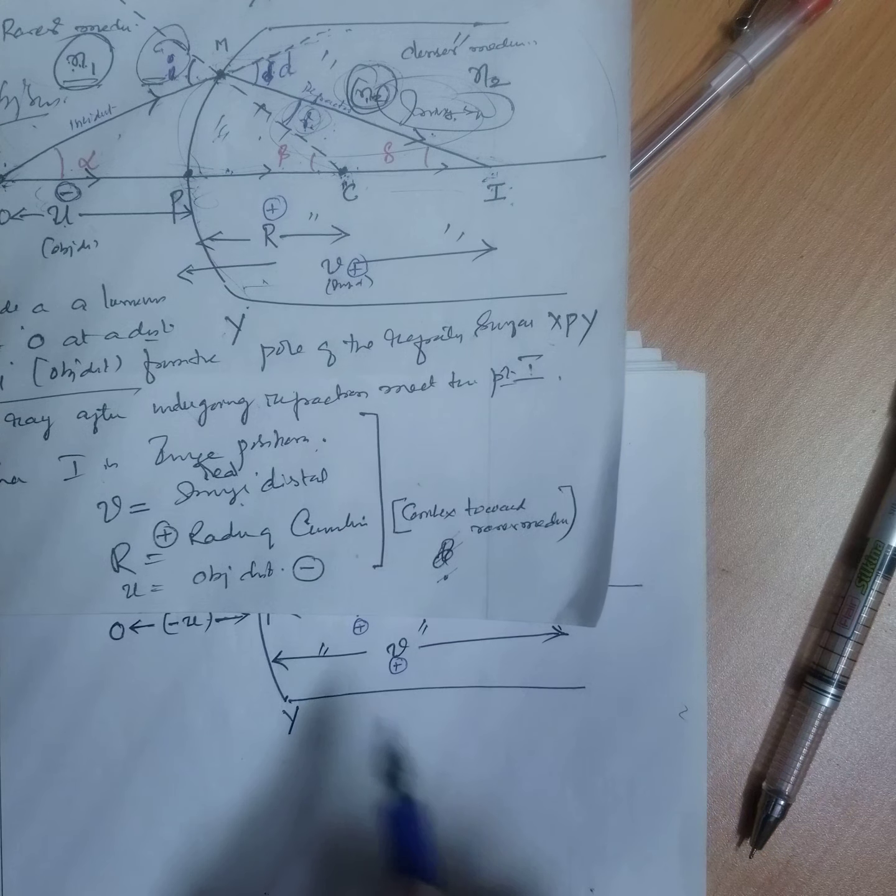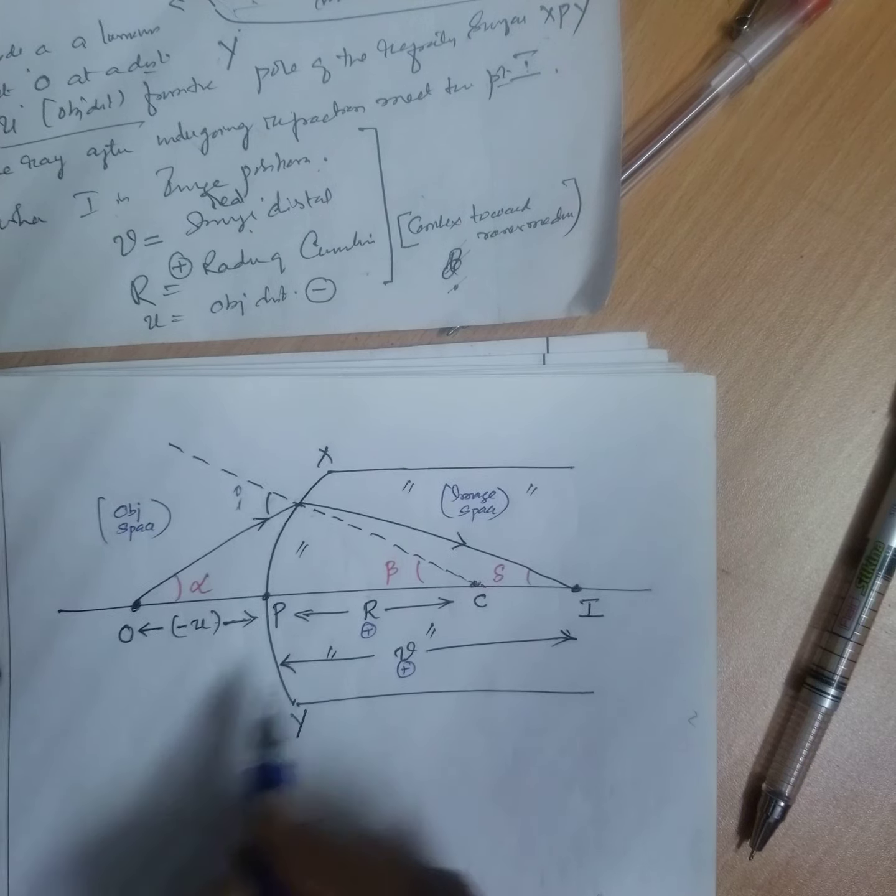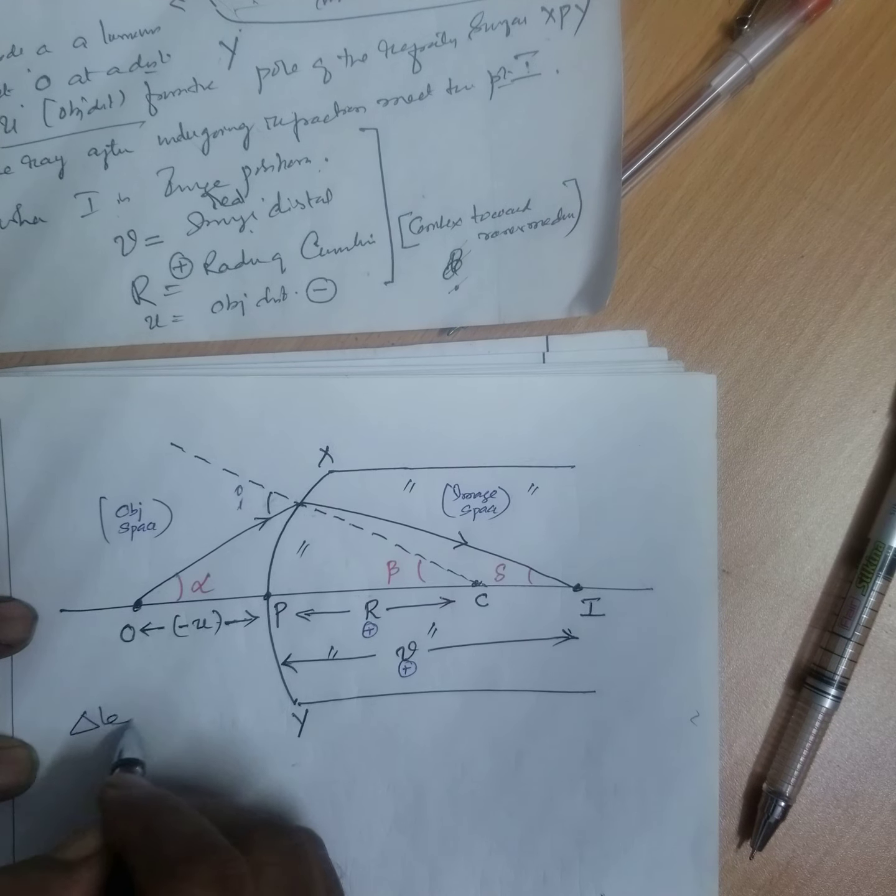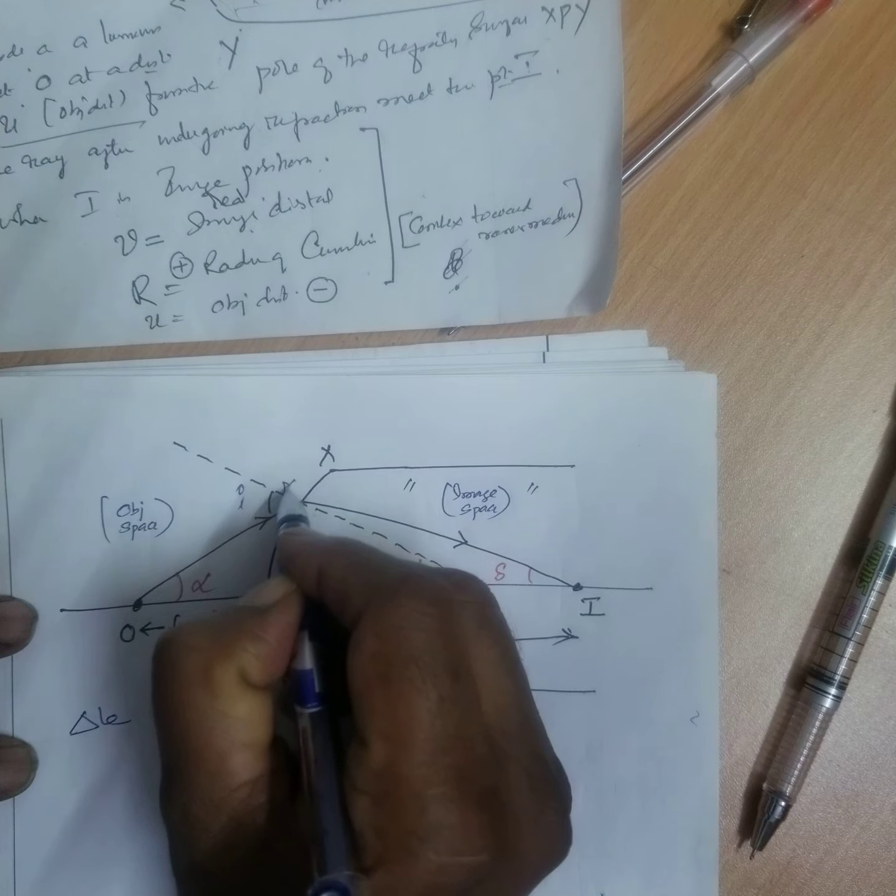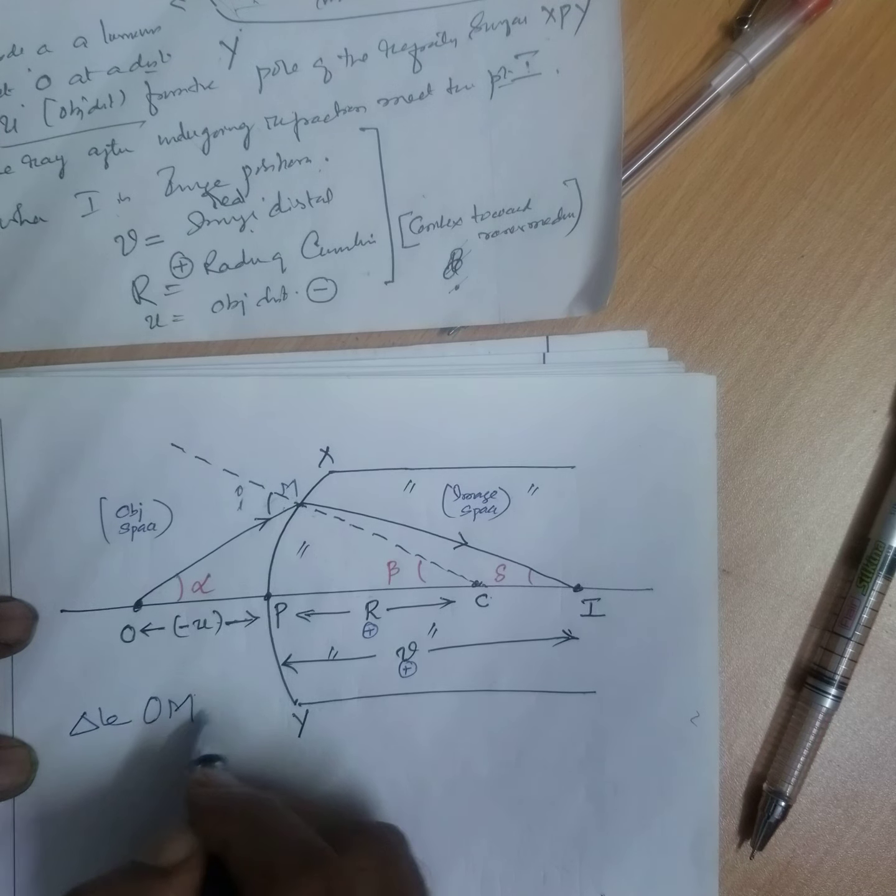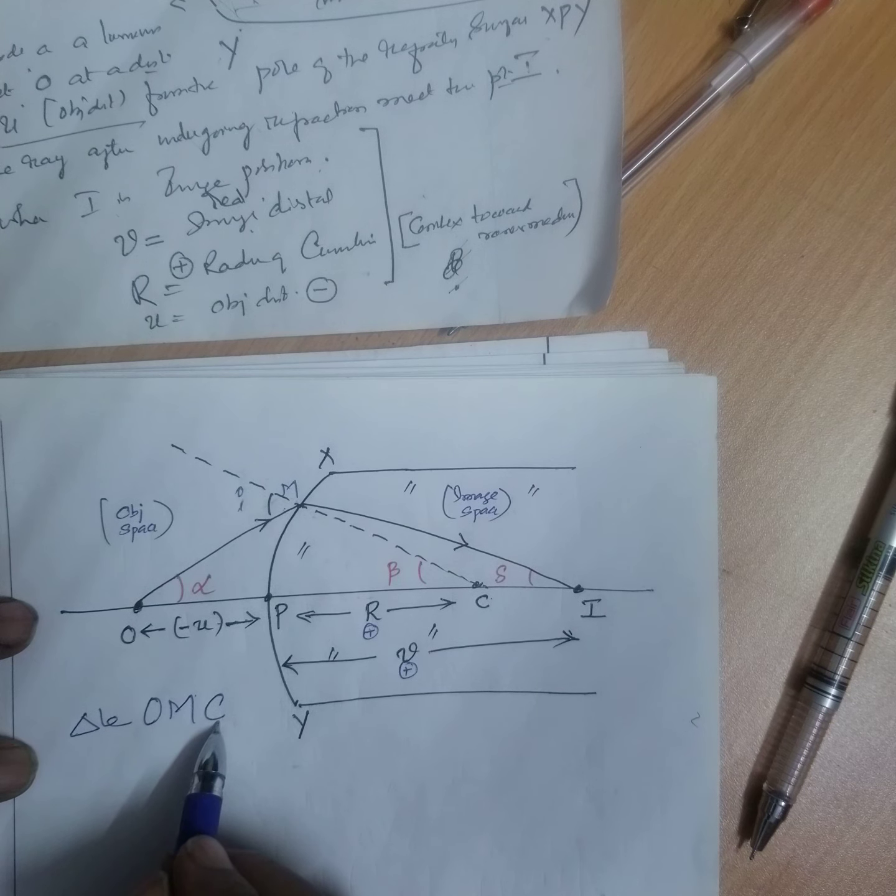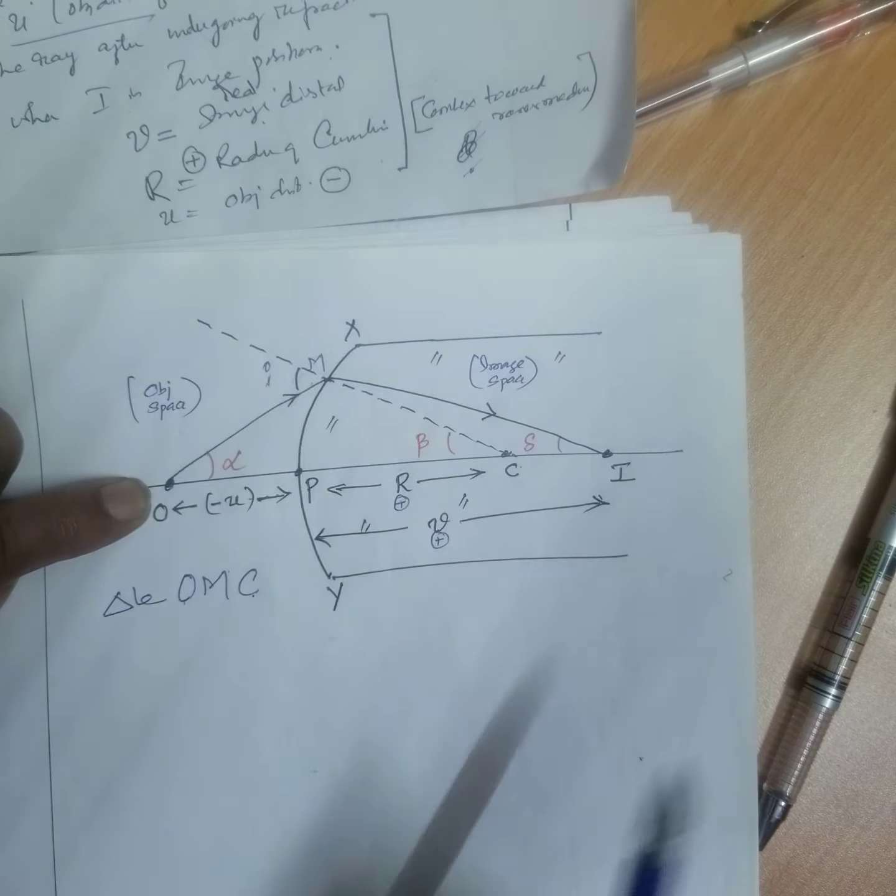Now here the same thing I have drawn here. Okay. Now you take this from triangle. From triangle object, this is point of incident M. OMC - Object and central curvature. Object and central curvature through point of incident.